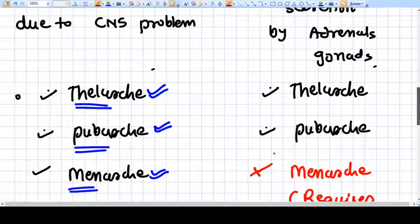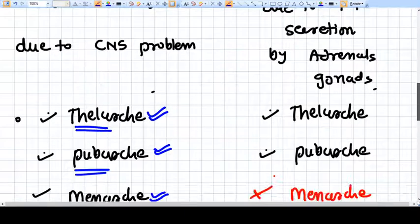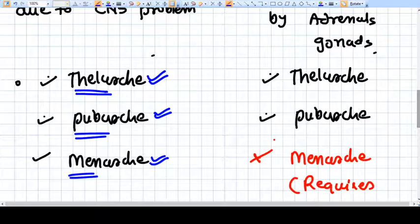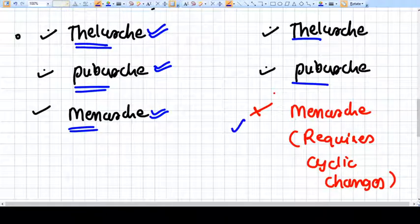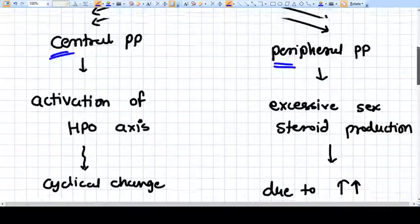But in peripheral precocious puberty you will find thelarche and pubarche, but not menarche. Why?